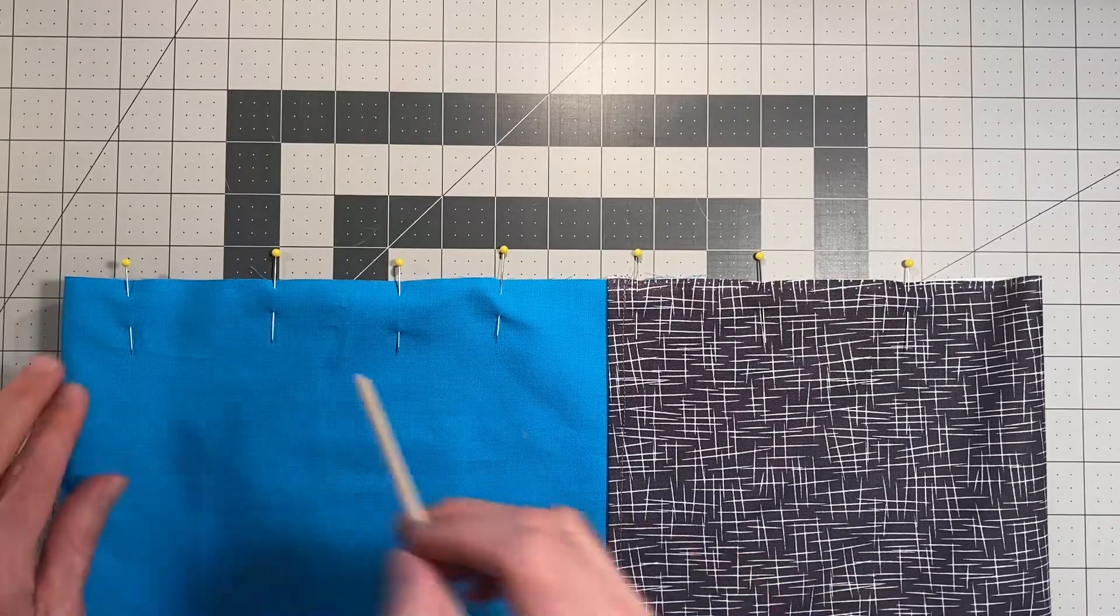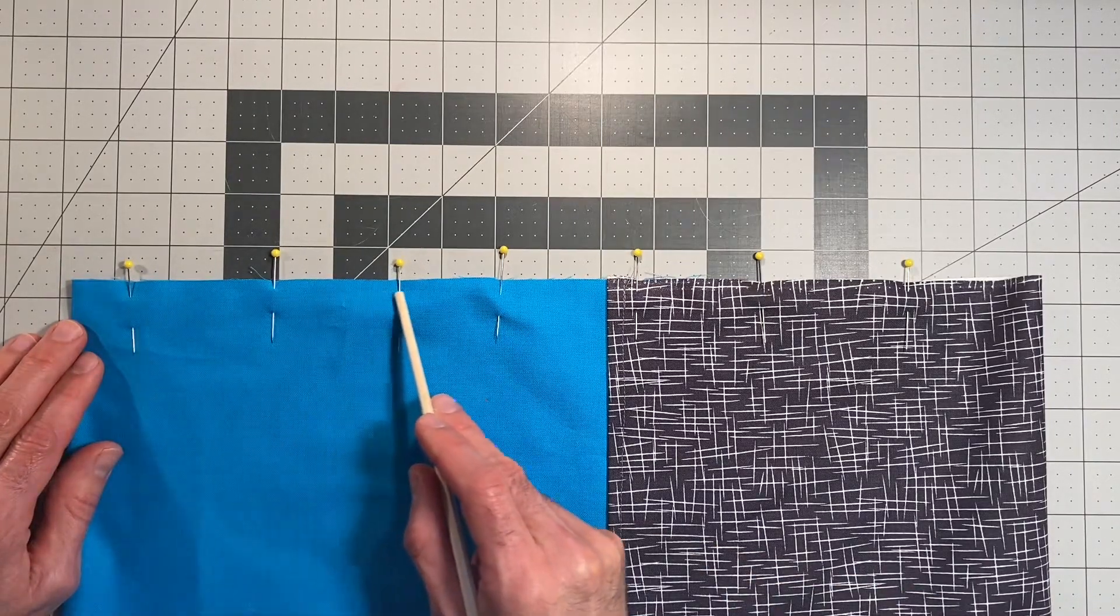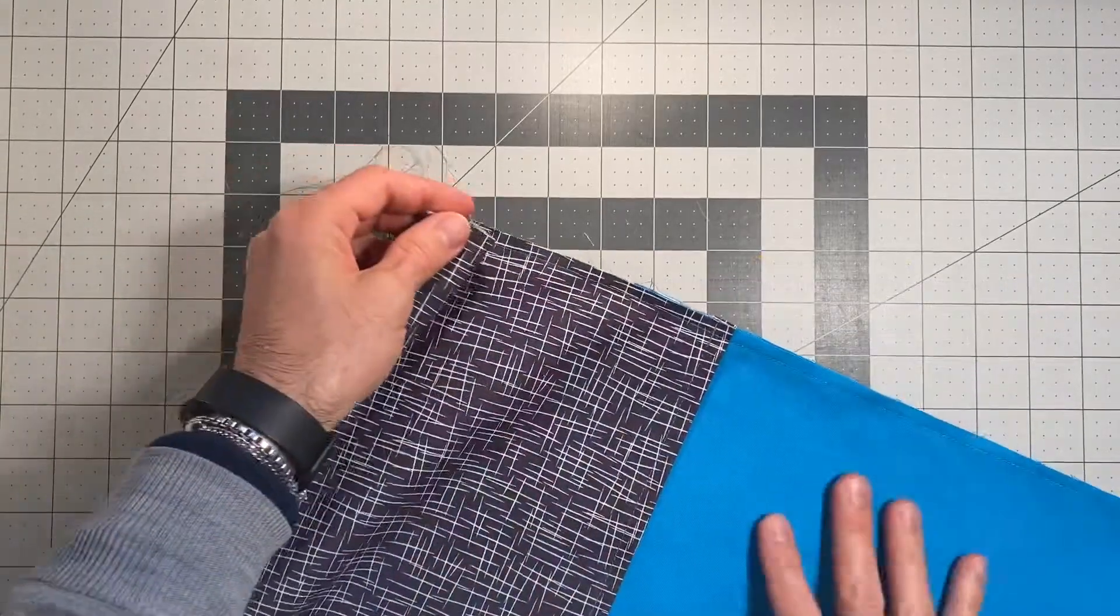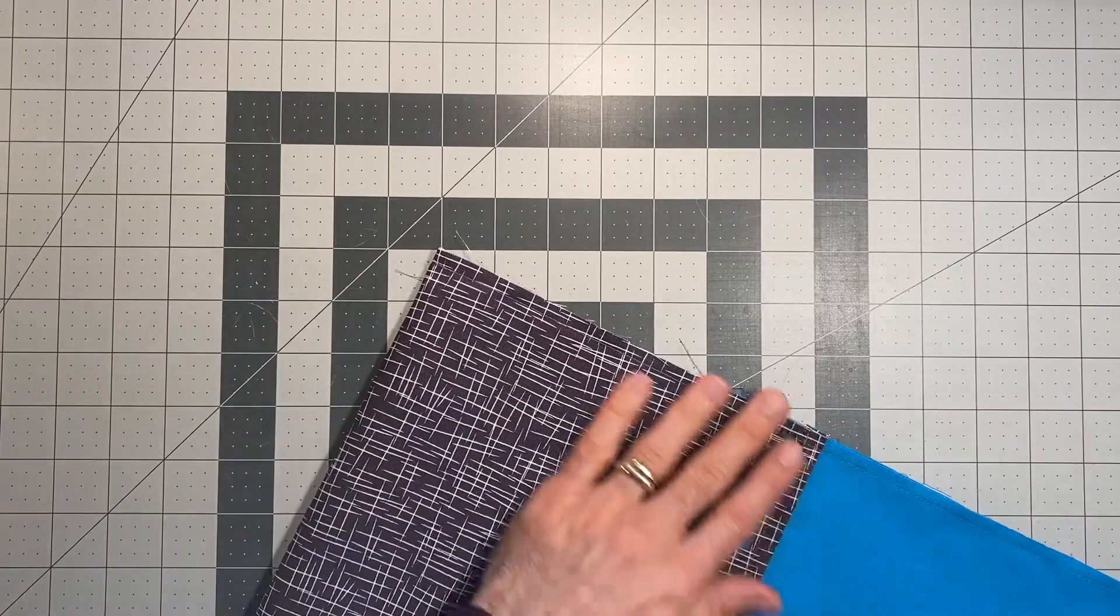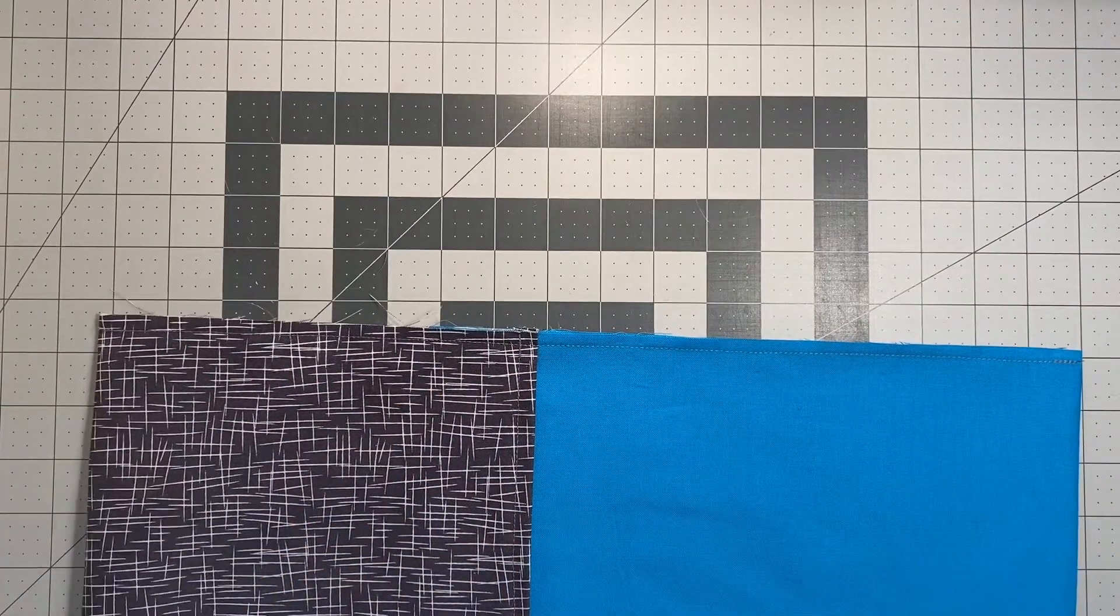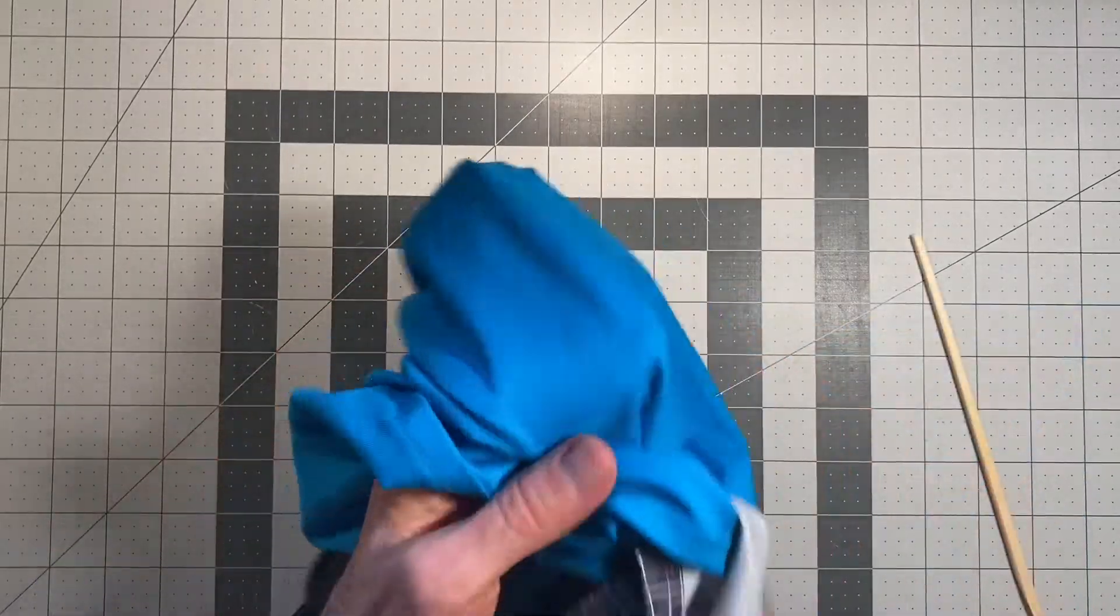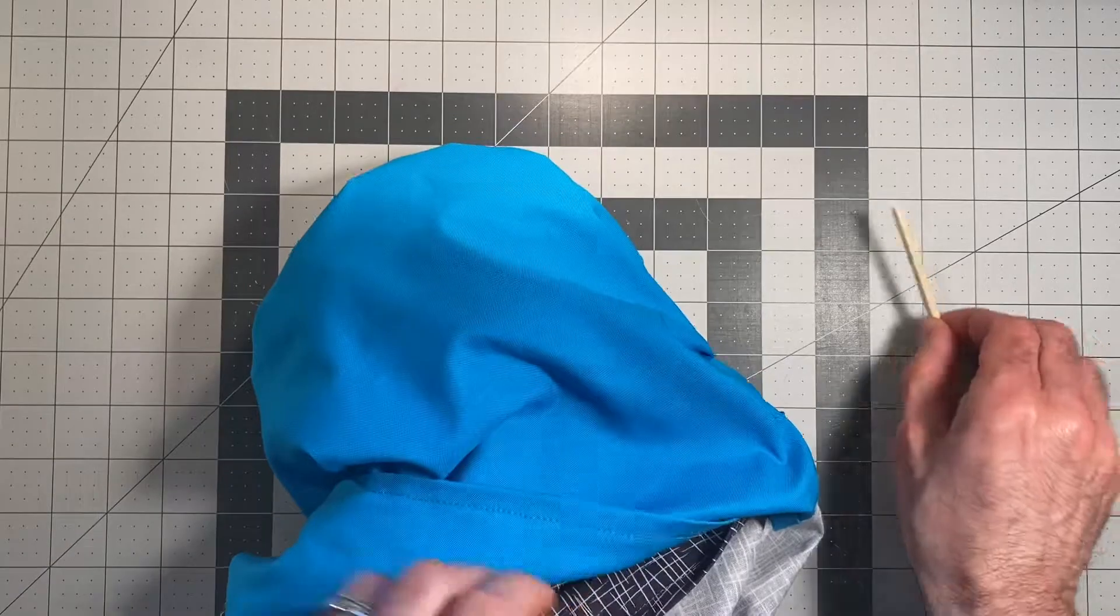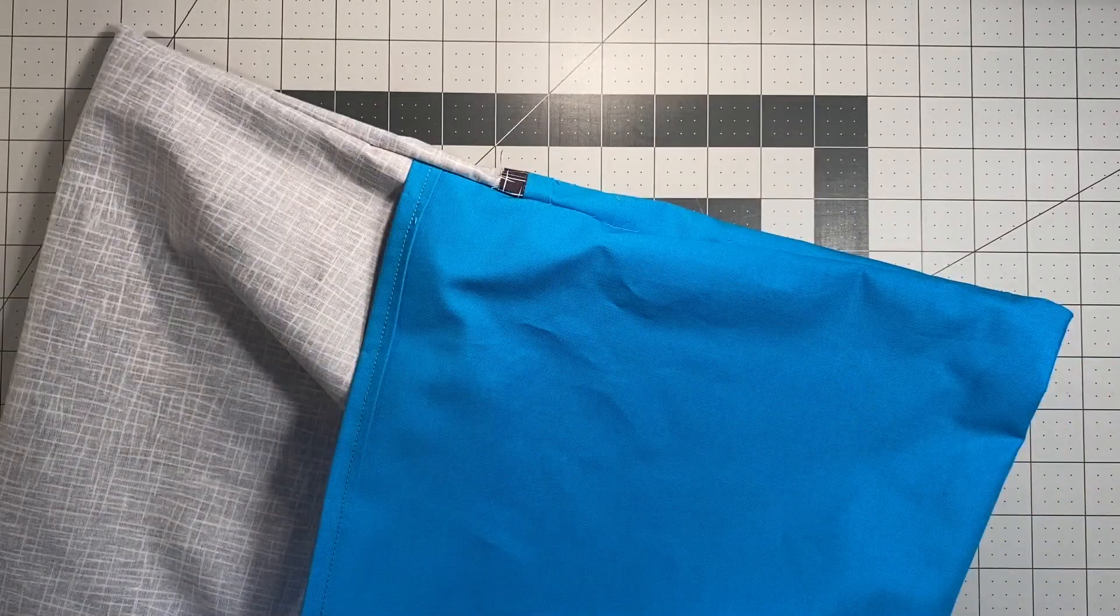Now I'll sew a narrower quarter inch seam allowance to close the sides up. I've done that to both long sides and now I need to turn the cover inside out and I'm using a chopstick to help me push out the corners. This is a pretty handy tool to have in the sewing room.